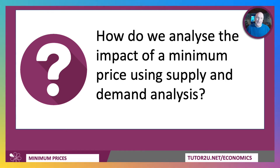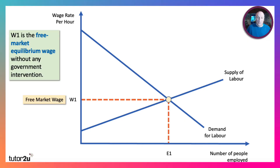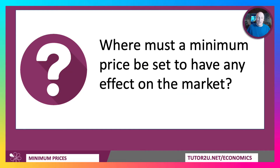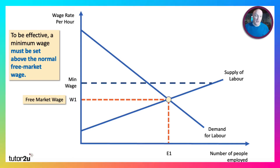Let's think about minimum pricing in terms of supply and demand analysis, taking the minimum wage as our example. We have the wage rate on the y-axis and employment on the x-axis. The normal free market wage will be W1 with E1 workers employed — that's without any government intervention. To have any effect on the market, a minimum price must be set above the normal free market wage.